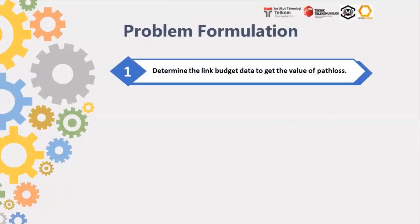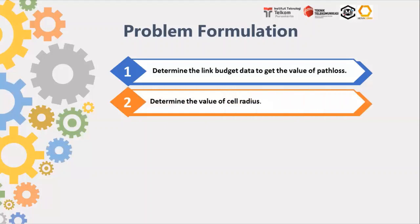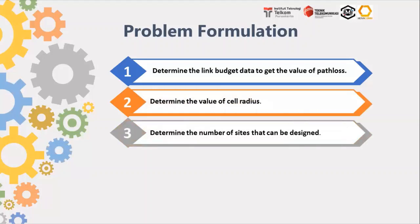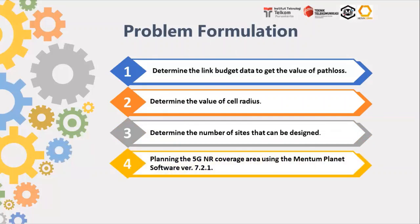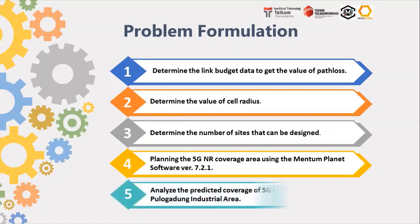Second, there are some points to define the problem specifically. Number one, determine the link budget data to get the value of path loss, determine the value of cell radius, determine the number of sites that can be designed, plan the 5G NR coverage area using Mentum Planet software, and analyze the predicted coverage of 5G technology in the Pulogadung industrial area.